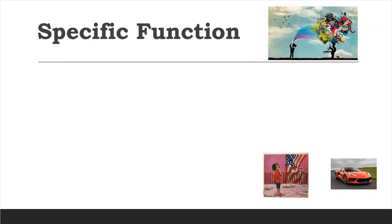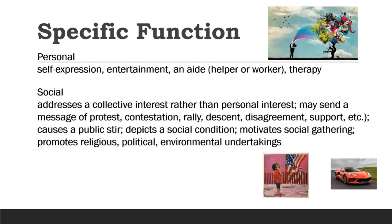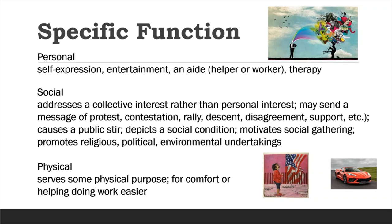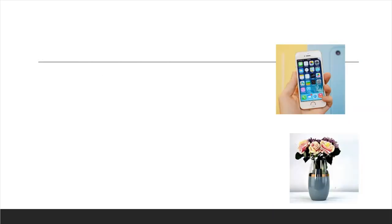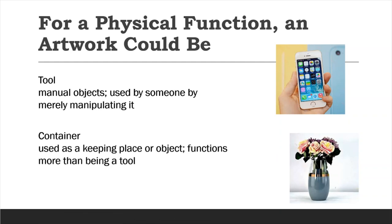These are the specific functions of an artwork. They include personal function — as a form of self-expression, entertainment, or personal consumption. Social function involves the interest of the community or society, because it involves social awareness and awakens social responsibility. Physical function means the artwork gives service to people for comfort or convenience — it could be a tool such as a cell phone or toothbrush, or a container like a building or a vase where you could place something.